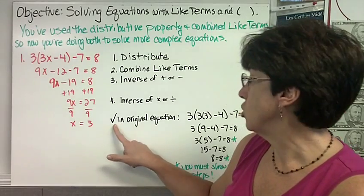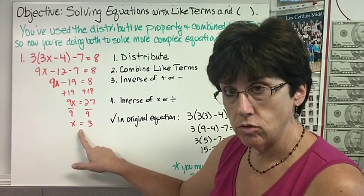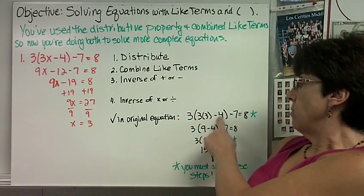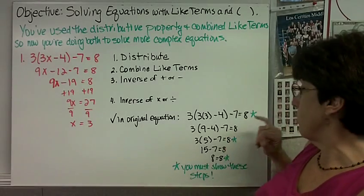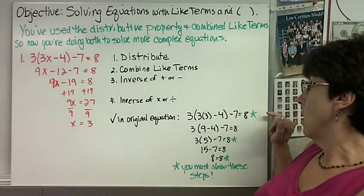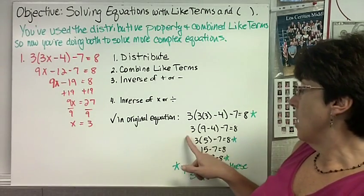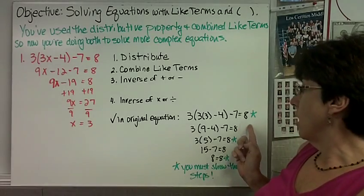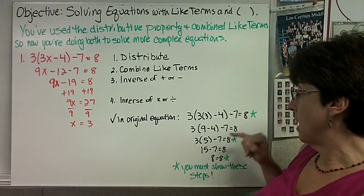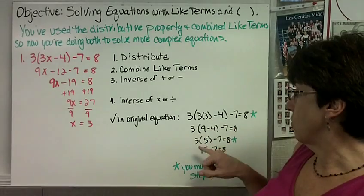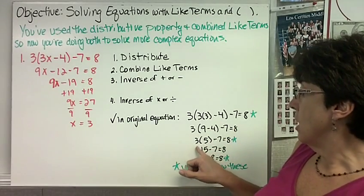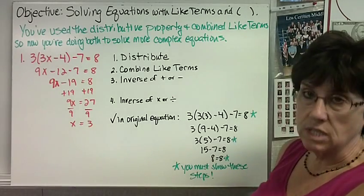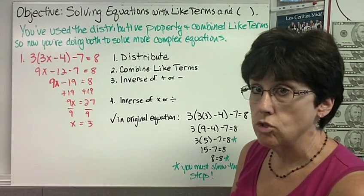To check, substitute x equals 3 into the original equation: 3 times the quantity of 3 times 3 minus 4, minus 7, equals 8. You must show me the original equation with the solution substituted in. This gives us 3 times the quantity of 9 minus 4, minus 7, equals 8. Then 3 times 5 minus 7 equals 8. 3 times 5 is 15, and 15 minus 7 is 8. Show me 8 equals 8. Those three steps are the minimum required for your check.